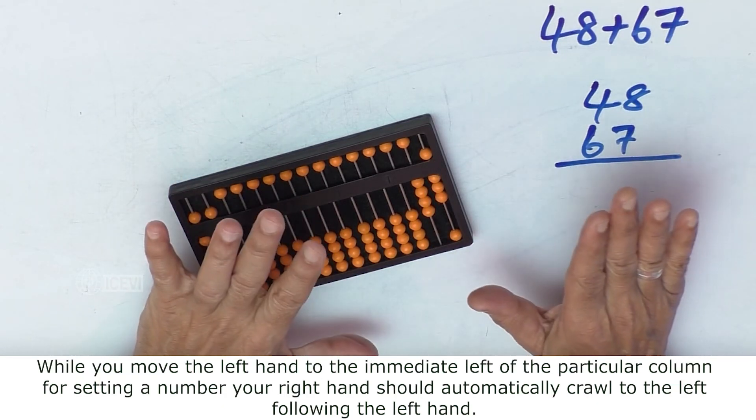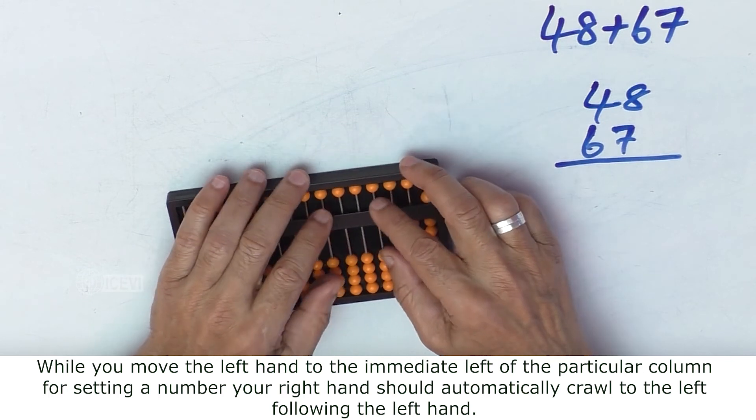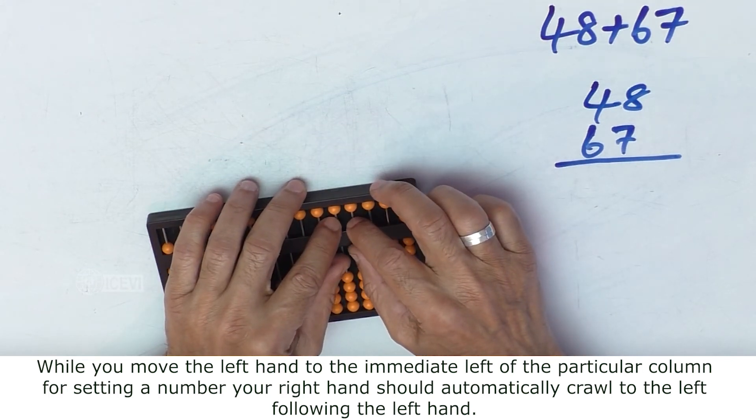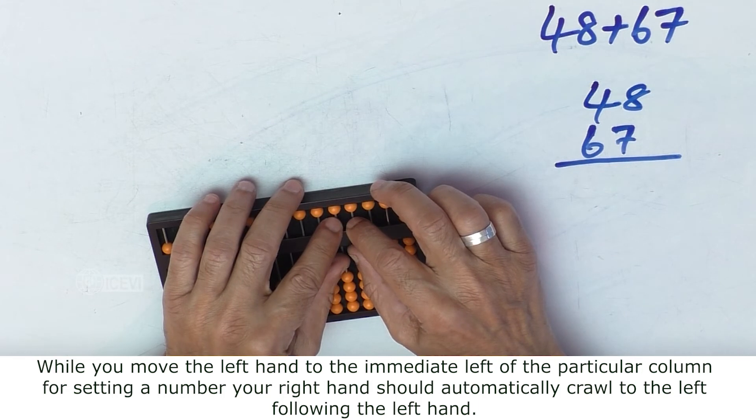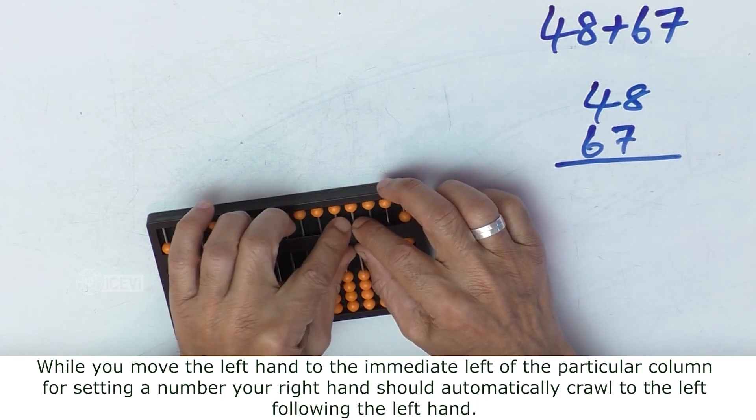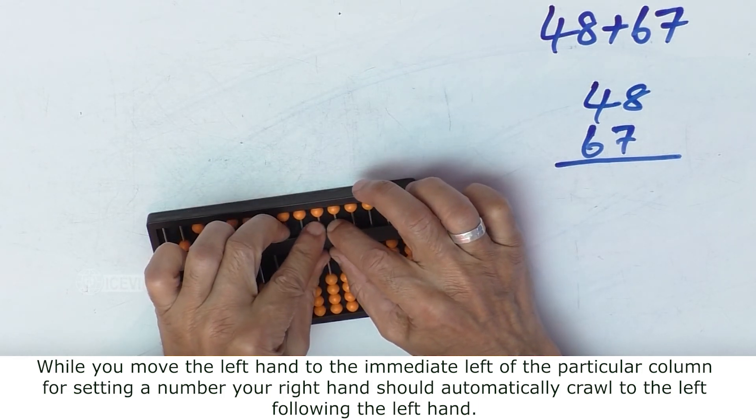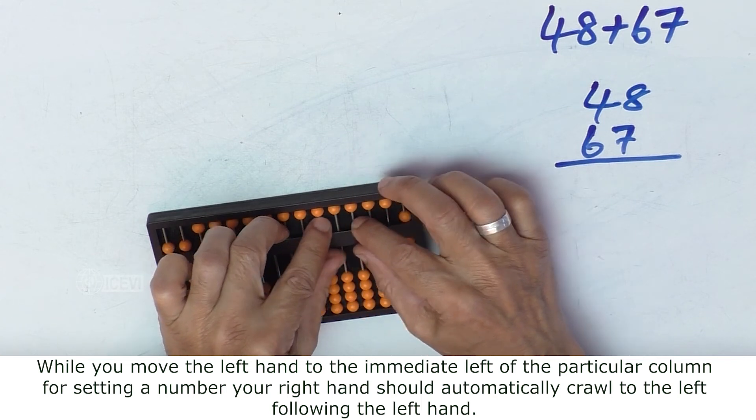While you move the left hand to the immediate left of the particular column for setting a number, your right hand should automatically crawl to the left, following the left hand.